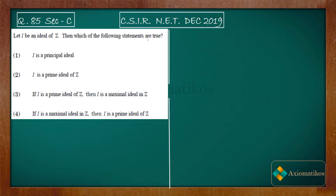The first option suggests that I is a principal ideal. The second option suggests that I is a prime ideal of Z. The third option suggests that if I is a prime ideal of Z, then I is a maximal ideal in Z. The fourth option suggests that if I is a maximal ideal in Z, then I is a prime ideal of Z.